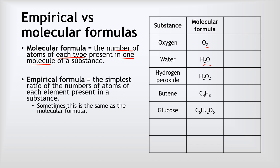We've also got another type of formula called an empirical formula. This is the simplest ratio of the numbers of atoms of each element present in a substance. Sometimes this will be the same as the molecular formula, but often it won't.